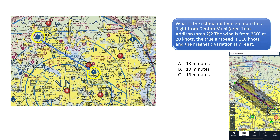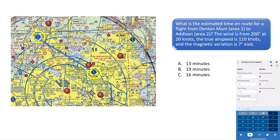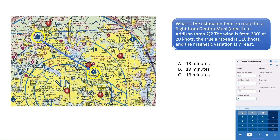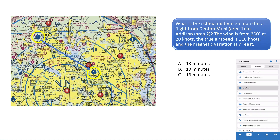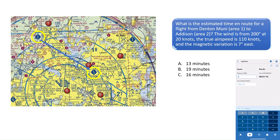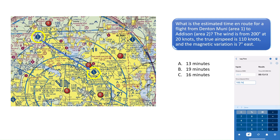We then need to find the ground speed given the wind conditions. We can find the ground speed using the heading and ground speed function on an E6B calculator. Enter the wind direction of 200 degrees, the wind speed of 20 knots, the true course of 128 degrees, and the true airspeed of 110 knots to find the ground speed of 102 knots. Then use the elapsed time function — with the distance of 22.5 nautical miles and the ground speed of 102 knots — to find the estimated time of 13 minutes and 13 seconds.